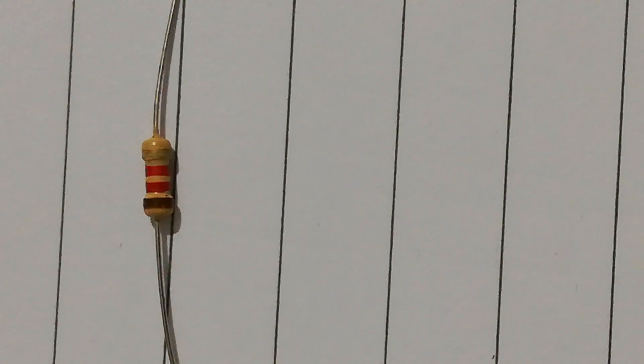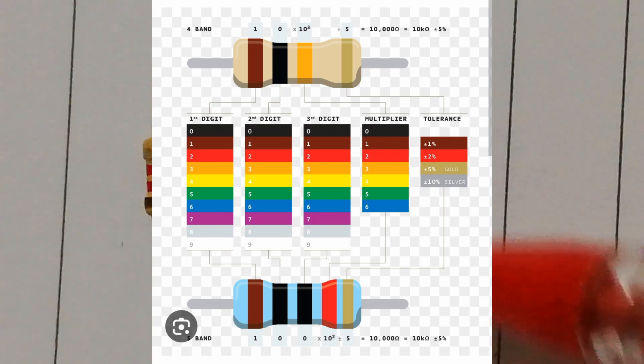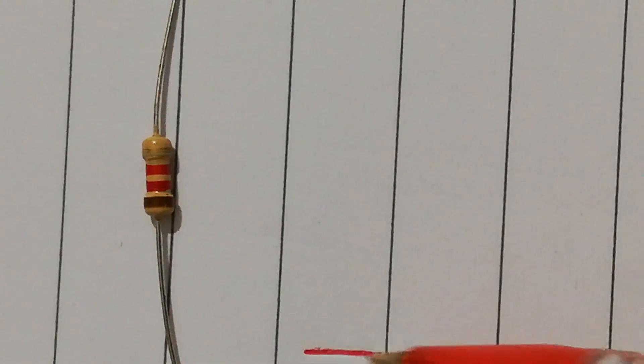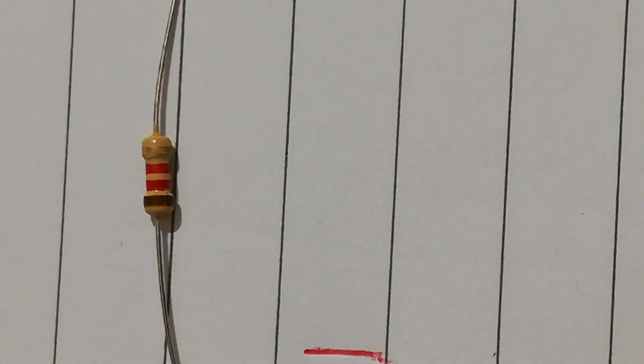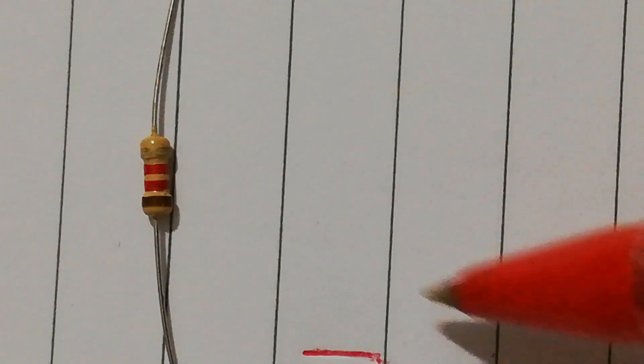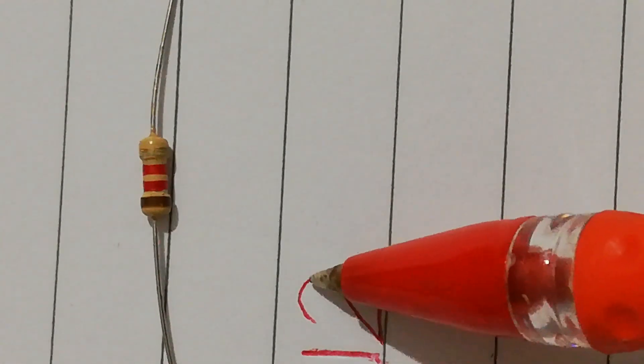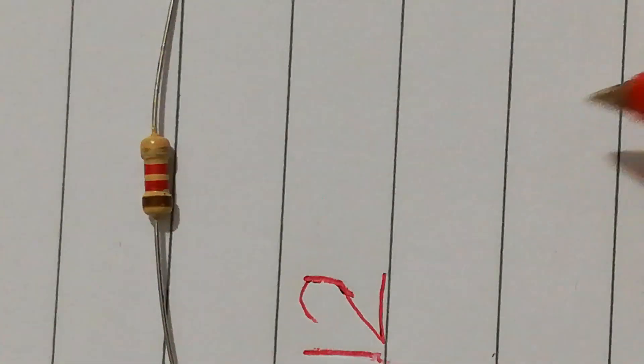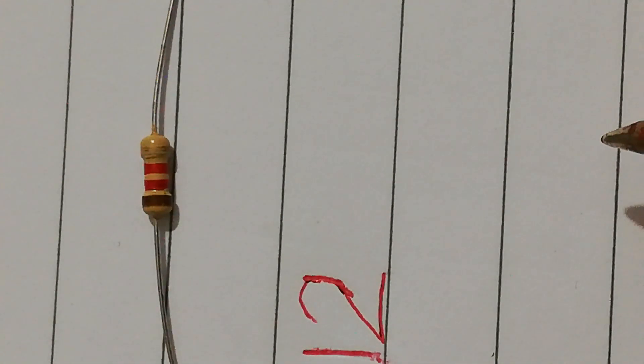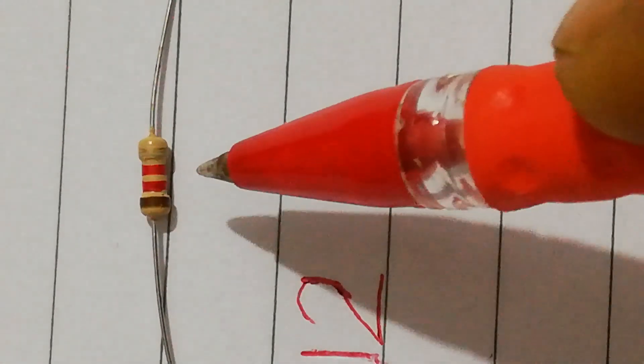So the first color is brown as we said before, and the value from the color code would be one. Then the second color is red, the value of it would be two.